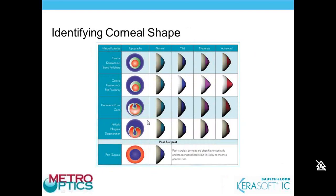Topography examples break down keratoconus into central keratoconus with a steep periphery, central keratoconus with a flat periphery, low decentered cone, and pellucid marginal degeneration. The fitting guide includes actual corneal profiles to gauge mild, moderate, and advanced stages to help select the first diagnostic lens. For post-surgical eyes — whether corneal transplant or post-refractive surgery — the reverse geometry tabletop-type presentation is when you'd use the 8.6 steep-2 diagnostic lens.